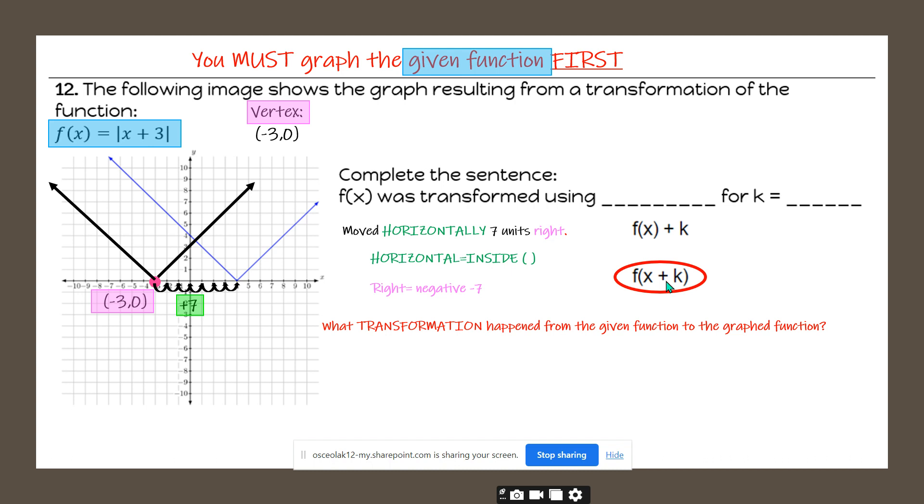Now, right means negative or a negative 7. So remember, x is lie and the movement is happening inside the parentheses. And because x is lie, it's not going to be a positive 7, but a negative 7.